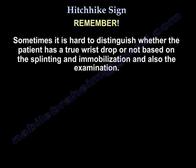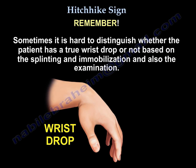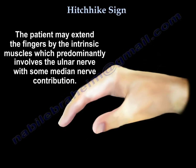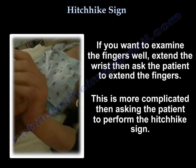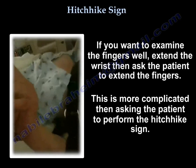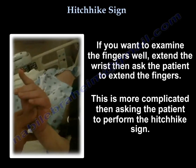Just remember, sometimes it's hard to distinguish whether the patient has a wrist drop or not, based on splinting, immobilization, and examination findings. If you examine the fingers and thumb, the patient may extend the fingers using the intrinsics, which are predominantly ulnar nerve. So if you want to examine the fingers properly, extend the wrist first, then ask the patient to extend the fingers. Asking the patient to hitchhike is simpler — either the patient can or cannot.